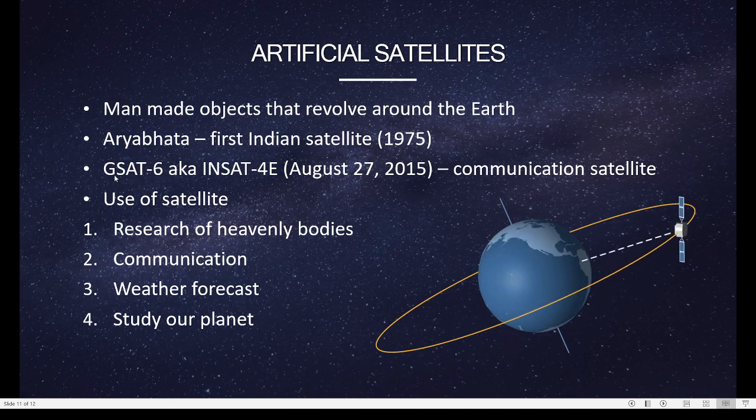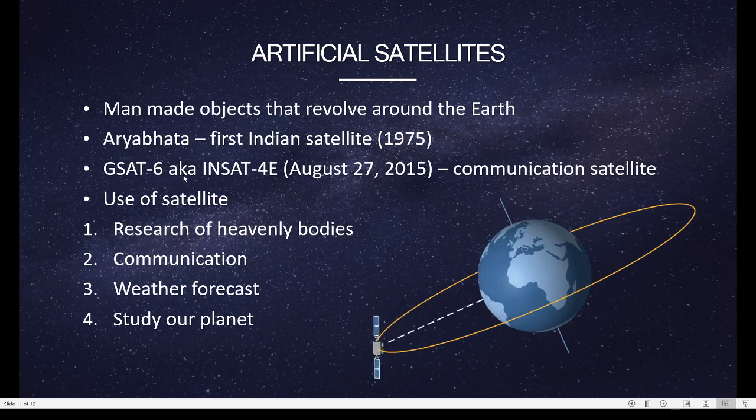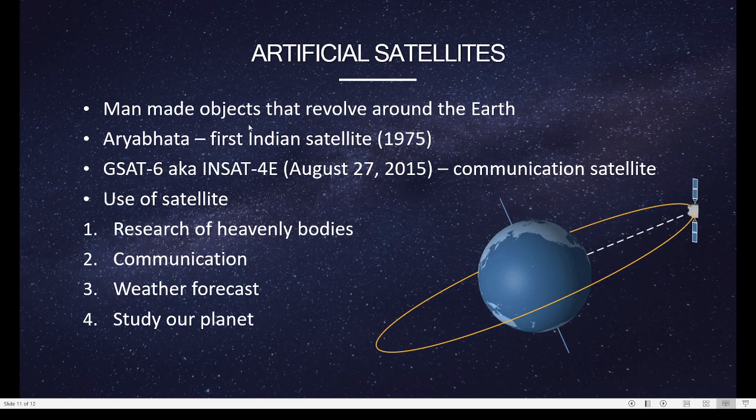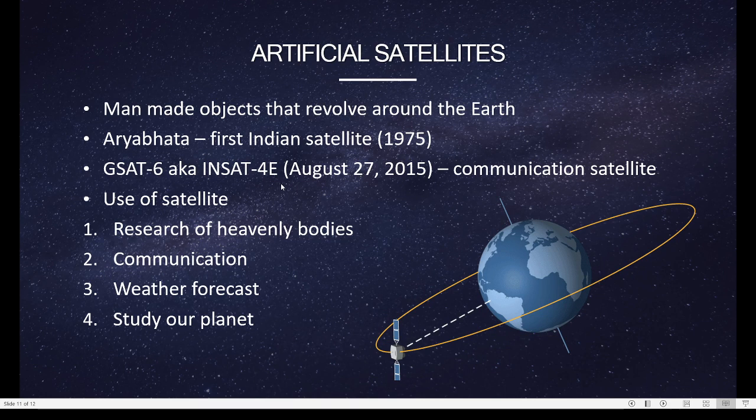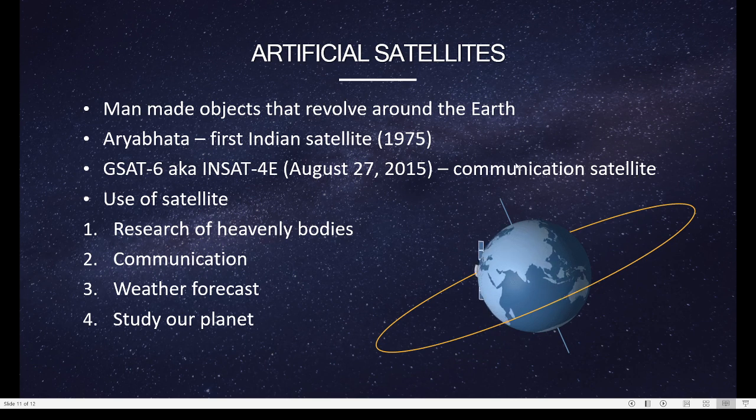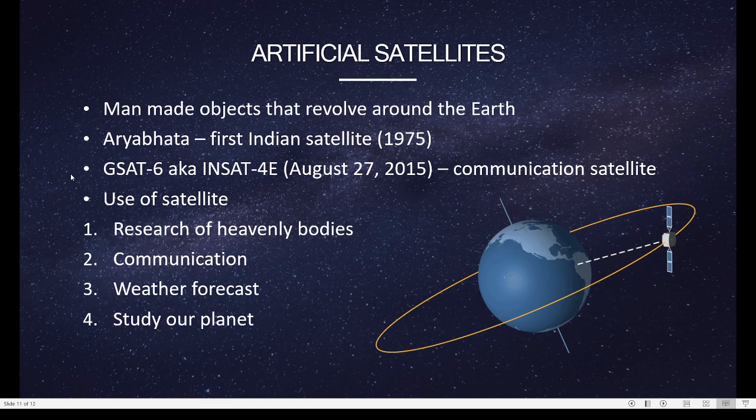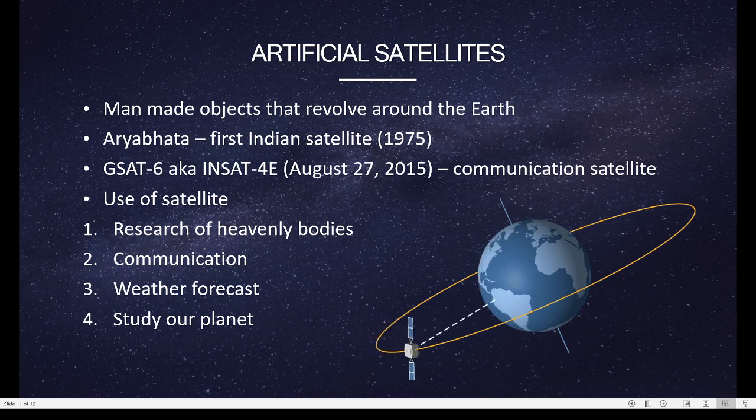There's another GSAT-6 aka means also known as, just something so that you sound cool. So remember this, aka means also known as. GSAT-6 also known as INSAT-4E was launched on August 27, 2015 and it is a communication satellite. So let's see the use of satellites. Why are we launching these man-made objects around the Earth?